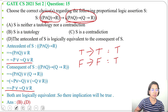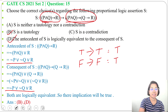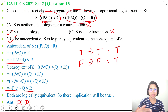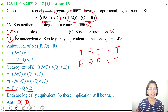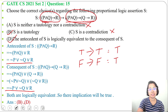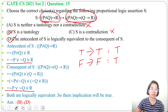So the answer will be option B and option D. Option A — S is neither tautology nor contradiction — is false. Option C — S is a contradiction — is also false, because for contradiction it should always be false, but here it's true. That's one approach by simplification. Another way is to create a truth table and check whether these two are equivalent.